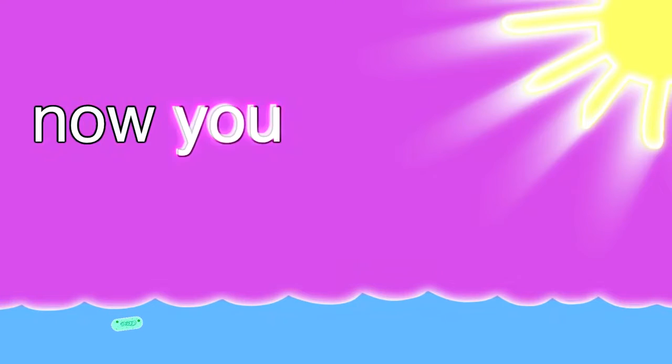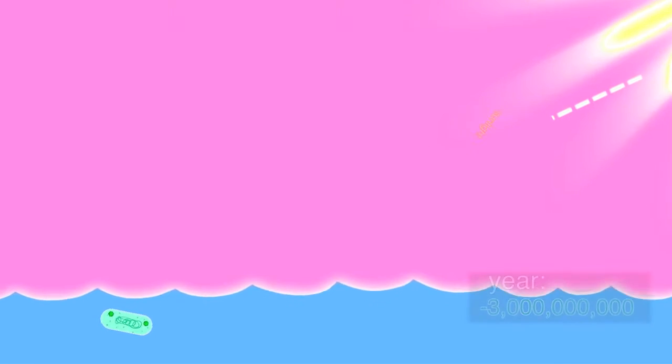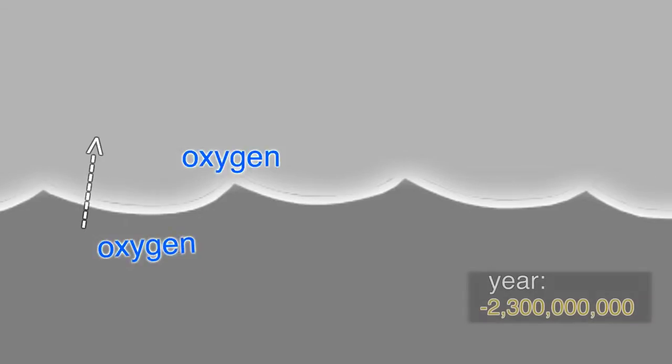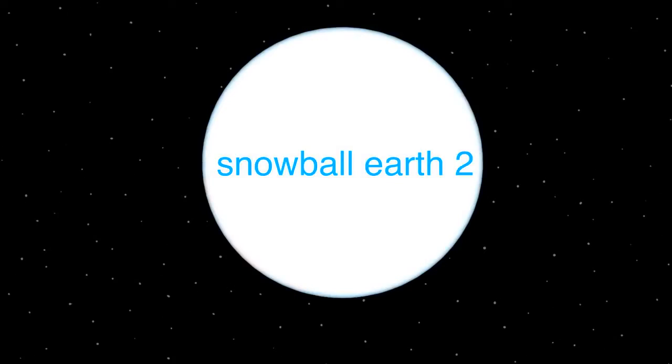Tired of living at the bottom of the ocean? Now you can eat sunlight. Using a revolutionary technique you can convert sunlight into food. Taste the sun. Side effect. Now there's oxygen everywhere and the sky's blue. Then the earth might have been a snowball for a while. Maybe even a couple of times.